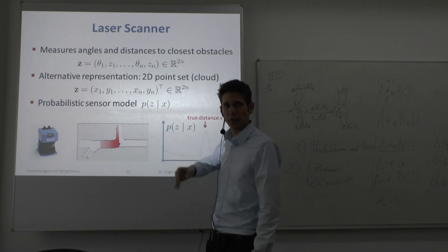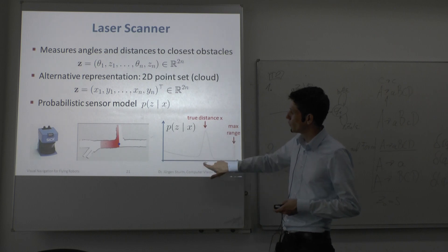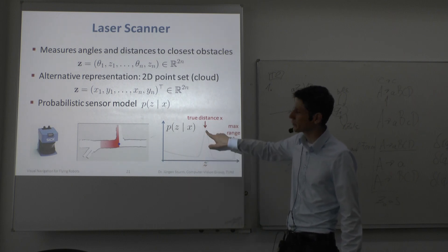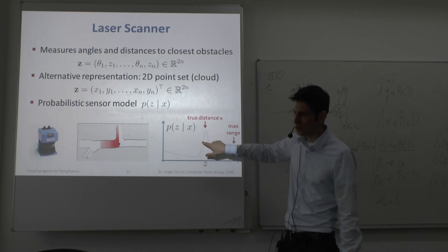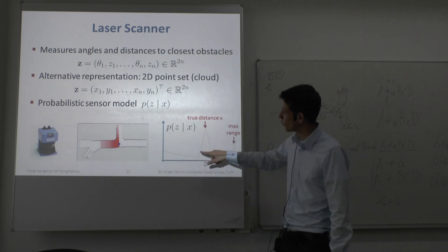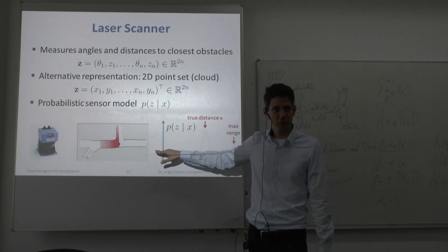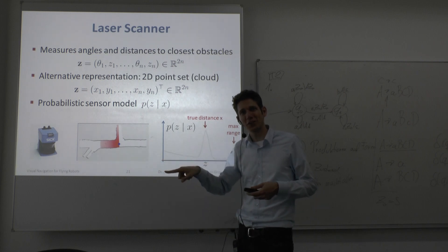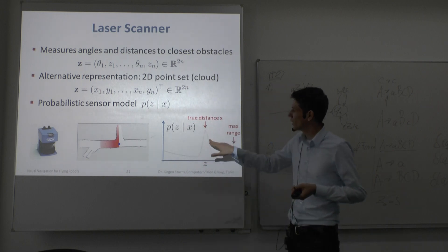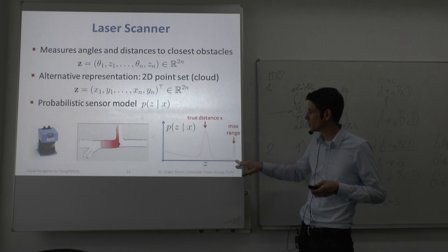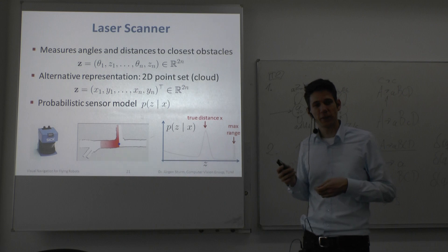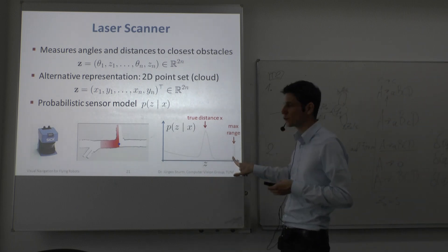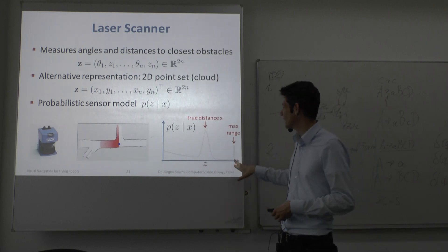You can design a probabilistic sensor model that tells you which measurement to expect given a known real distance. For example, looking at a wall at 2 meters, we expect the sensor to return a reading close to 2 meters with a Gaussian distribution. Sometimes closer measurements occur due to bad sensor readings or something walking in front of the robot. It can also happen that the sensor gets a max-range reading because it's looking at a reflective surface like a mirror or an extremely dark object, delivering a max range.